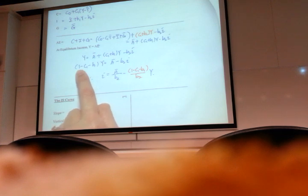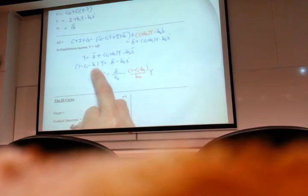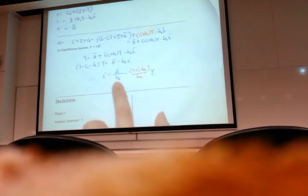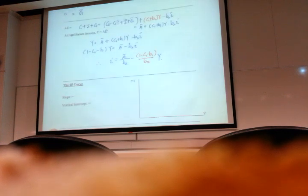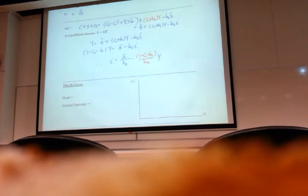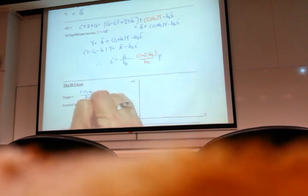It's a very common mistake that students forget there is a 1. Then bring the C1, B1 to the left. Then by rearranging, this is your IS. So you can see the slope is now 1 minus C1 minus B1 over B2.